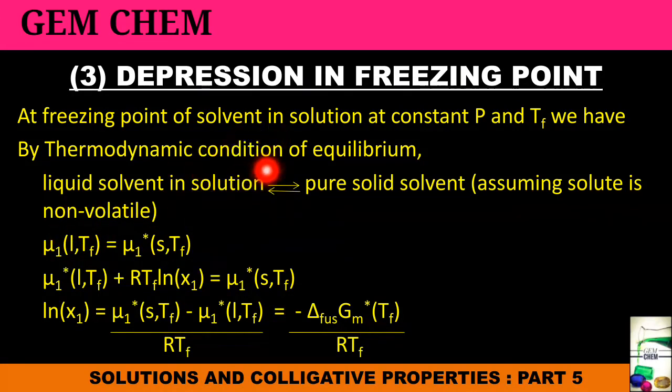If we see the derivation, then it will be represented with respect to the chemical potential as we have seen in the previous case. On solving, this can be evaluated as the pure state of the chemical potential plus the RTF ln X1. For details, you have to refer to the previous video. If you are coming directly to this video, then it will be difficult for you to understand. So first refer to the part 4 video and then only come to this video.